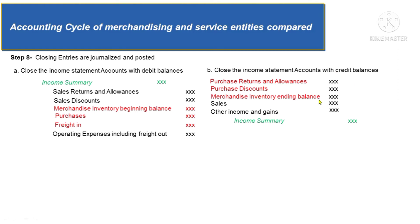You can total the income summary postings to determine net income. If credits are greater, the company has a net income; if debits are greater, the difference is a net loss. Note that the accounts highlighted in red are not used by entities using the perpetual inventory system. Under perpetual, you use the cost of sales account instead. The red-colored accounts are the components of cost of sales: beginning inventory plus net purchases (purchases plus freight in minus purchase returns and allowances minus purchase discounts) equals total goods available for sale, minus merchandise inventory ending, equals cost of sales.